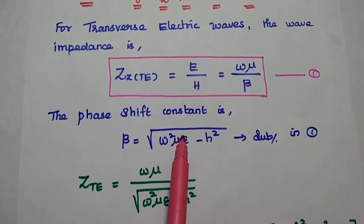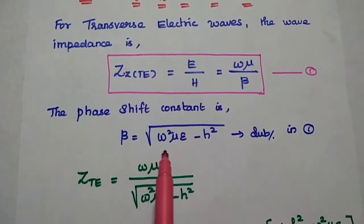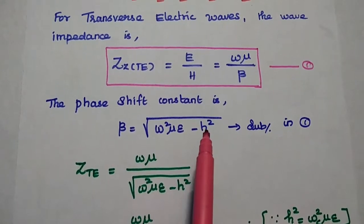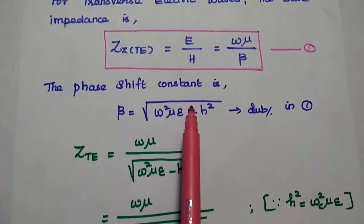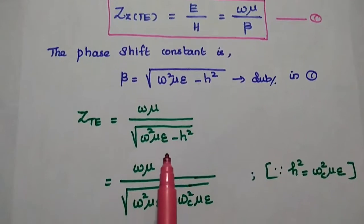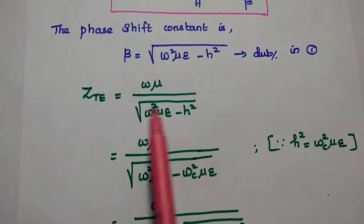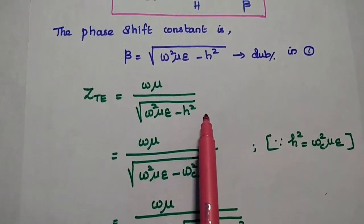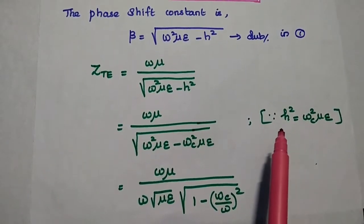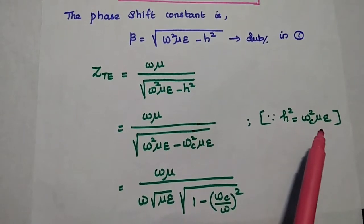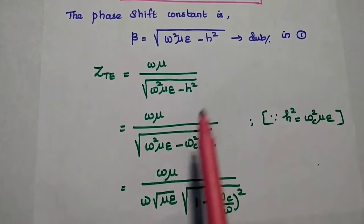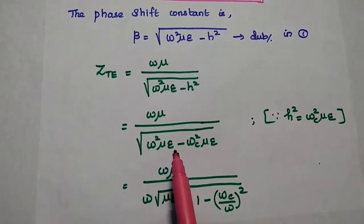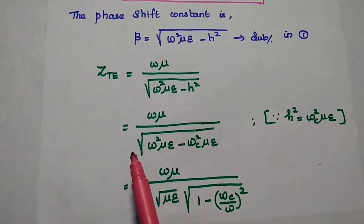Beta is the phase shift constant, with value equal to the square root of omega squared mu epsilon minus H squared. We substitute this value into the first equation to get Z_TE equal to omega mu divided by the square root of omega squared mu epsilon minus H squared. At cutoff frequency, H squared is equal to omega_c squared mu epsilon, and we substitute this value into the expression.